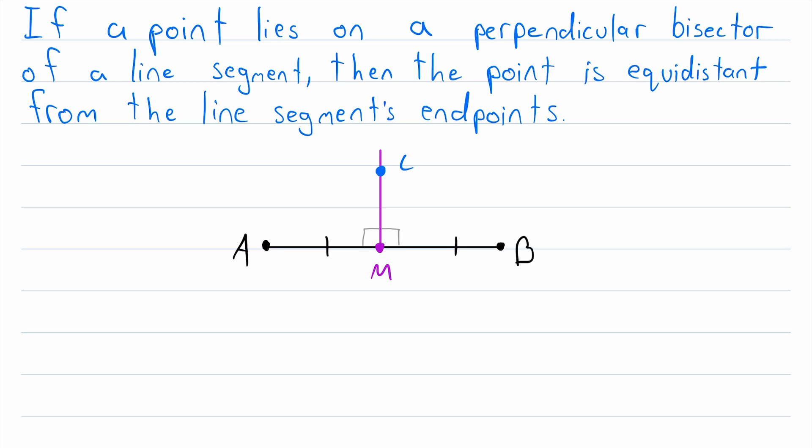If you've tried and you're struggling, I'll give you a couple hints before we really get into the proof. What are we trying to prove? We're trying to prove that this point C is equidistant from A and B. What do those distances look like?